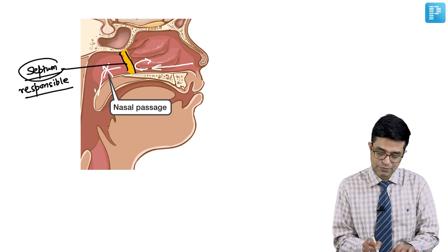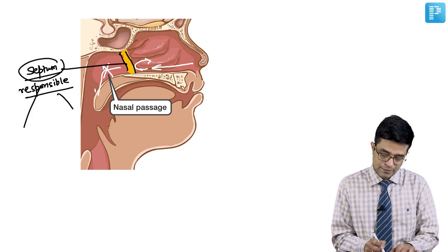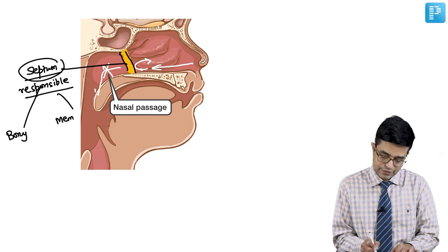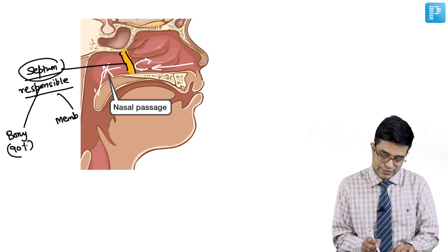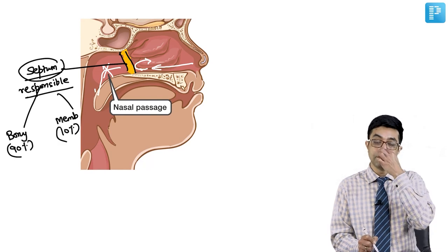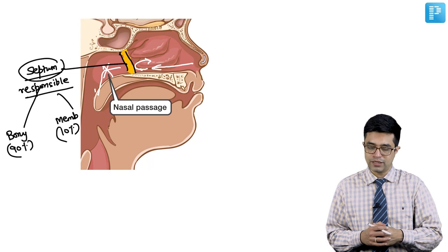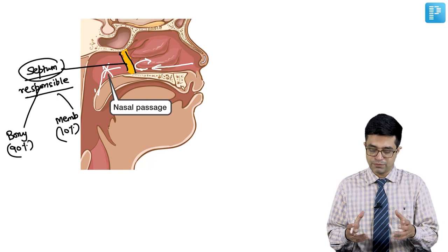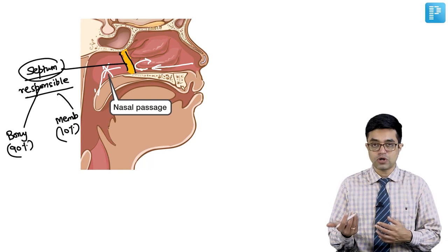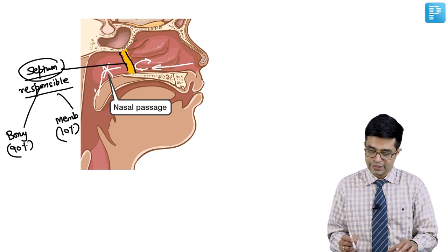The septum can either be bony or membranous. Bony septum is seen in 90% of cases and membranous septum in 10% of cases. Many children have a combination of the two. If asked which is more common, bony septum is more common.